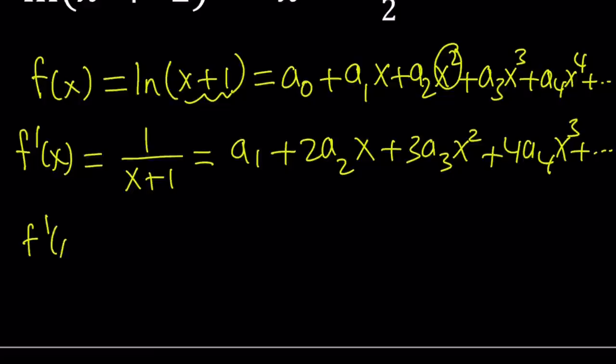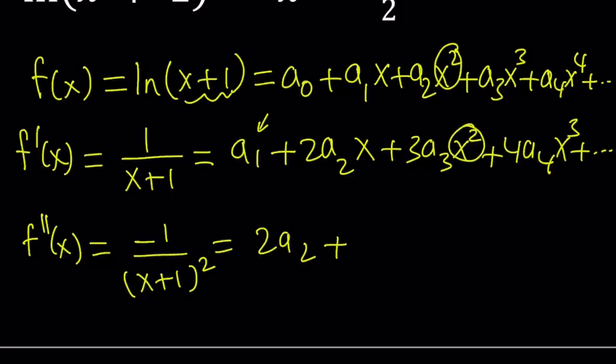Let's keep differentiating. The second derivative is negative 1 over (x+1)². You basically increase the power at the bottom and negate the sign. In the next level, we're going to have a 2 in the numerator. The derivative of the constant is 0, so ignore it. The derivative of 2a₂x is just 2a₂. Then x² is 2x, multiply that by 3, so you get 6a₃x. And then 12a₄x² and so on.